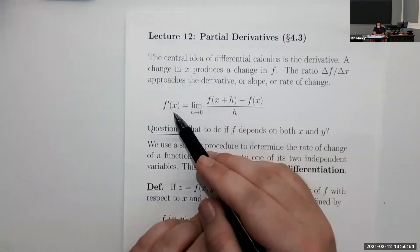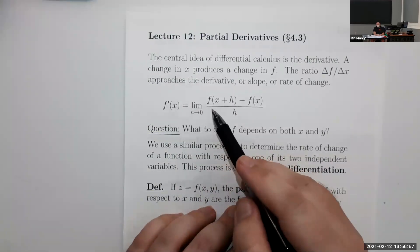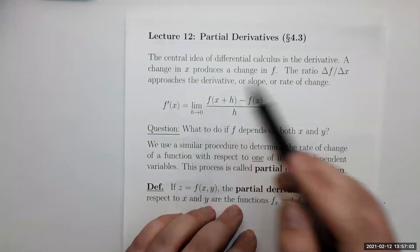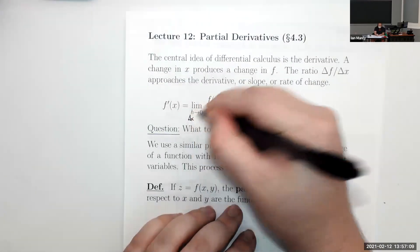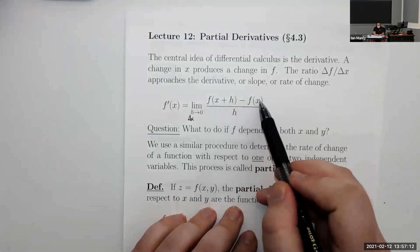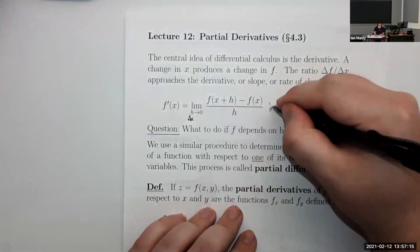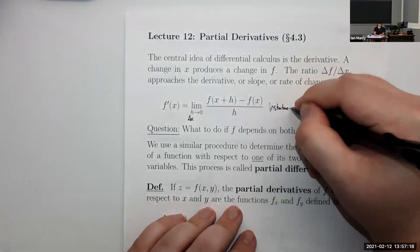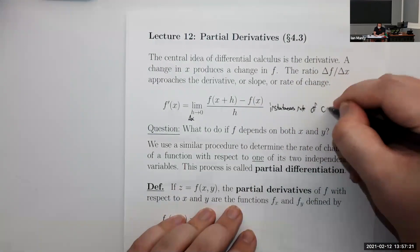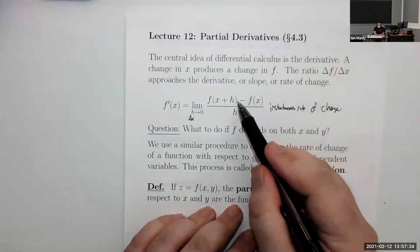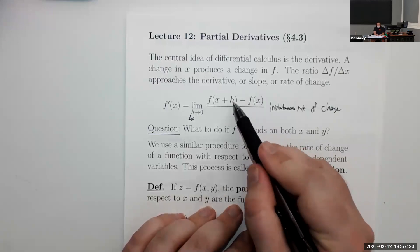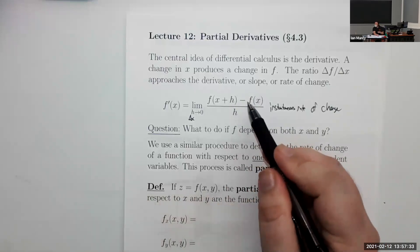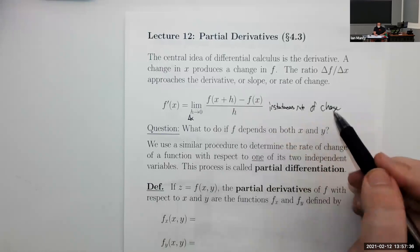The single variable derivative was actually a limit — remember, everything in calculus can be traced back to a limit. The single variable derivative is the limit as h goes to zero of f(x+h) minus f(x) over h. This represents the instantaneous rate of change. The normal rate of change without instantaneous would just be this where h is some non-zero number, but as we send h to zero, it becomes the instantaneous rate of change.